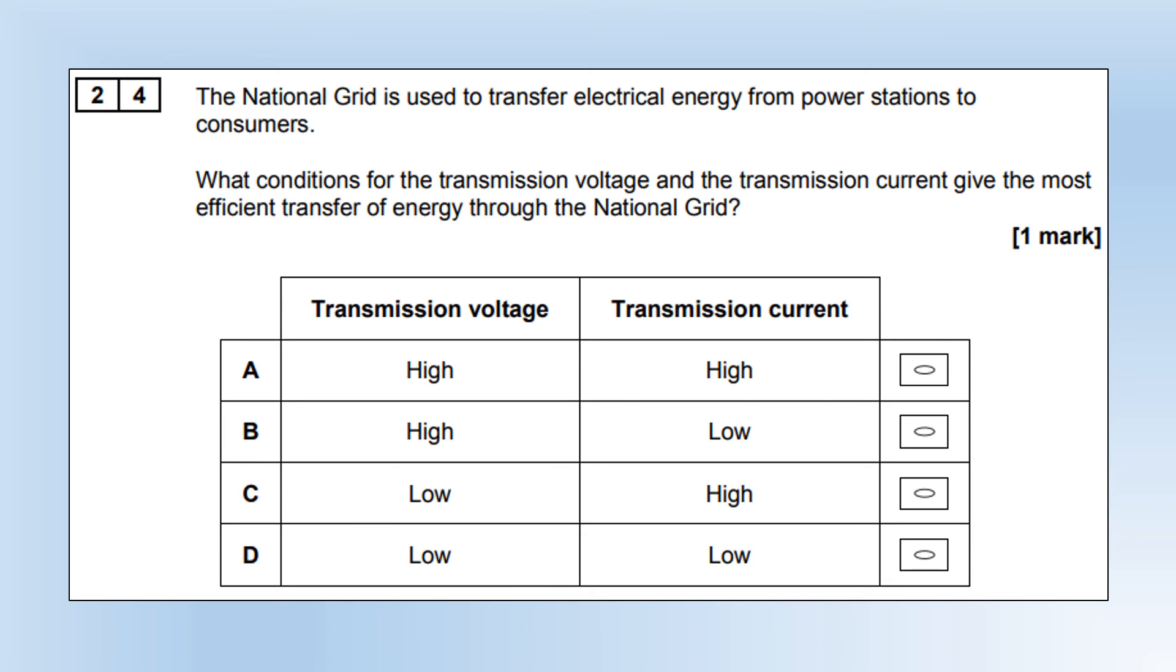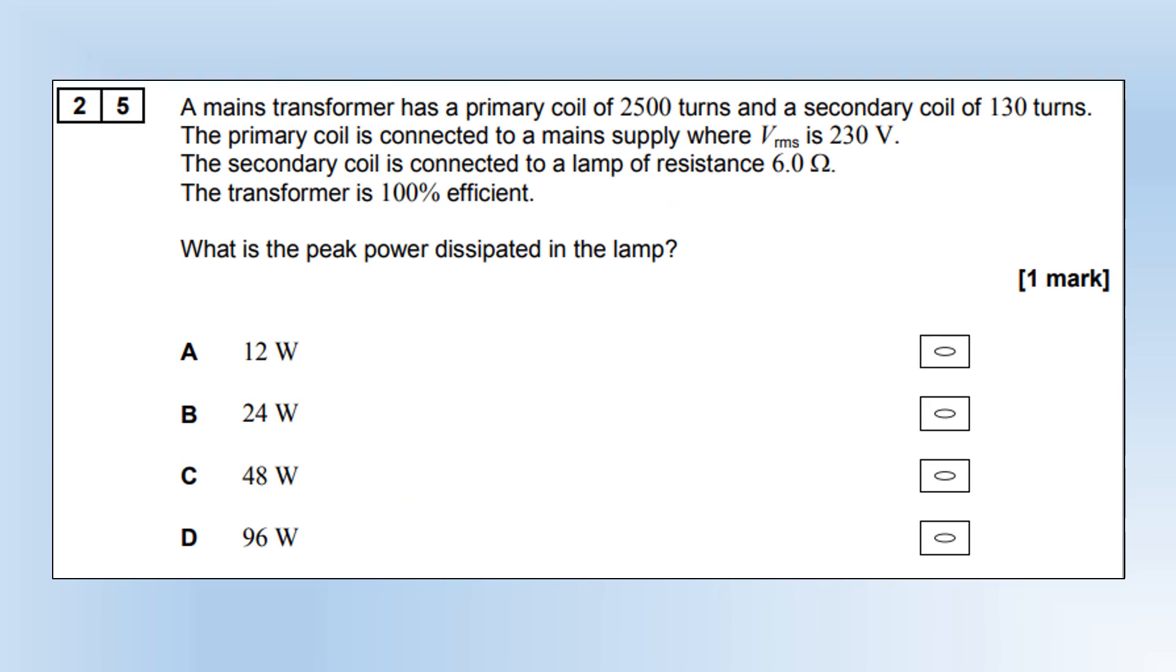The national grid is used to transfer electrical energy from power stations to consumers. What conditions for transmission voltage and transmission current give the most efficient transfer of energy? We want really low current, and to get that, we have to have very high voltage. That means we need option D. The mains transformer has a primary coil of 2,500 turns and a secondary coil of 130 turns. It's a step-down transformer. Primary coil has an RMS voltage of 230 volts. The secondary coil is connected to a lamp of resistance 6 ohms. The transformer is 100% efficient. What is the peak power dissipated in the lamp? We're going to calculate what the secondary RMS voltage is using the turns ratio. Then, we're going to calculate the average power on the secondary side using V squared over R. But the peak power is double the average, so we end up with 48 watts, option C.